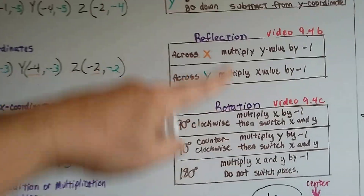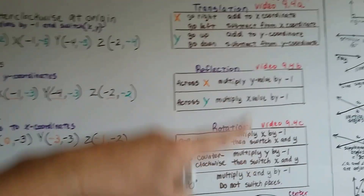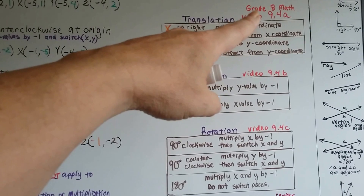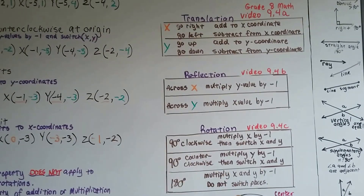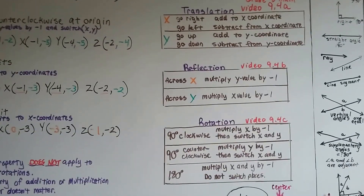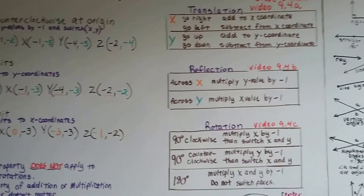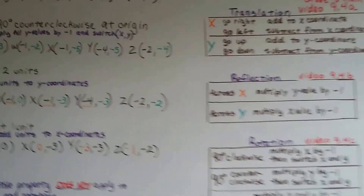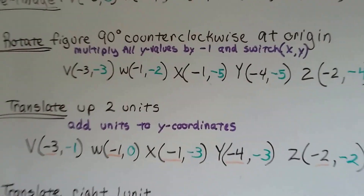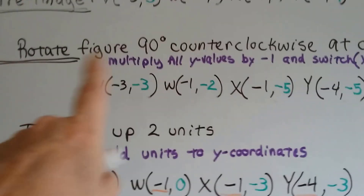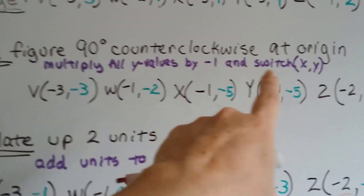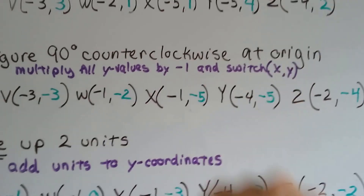If you don't know what I'm talking about with these rules, you need to go back to 9.4a and watch all three of those videos — B and C also. So we've got to multiply all the y-values by negative one and then switch x and y.